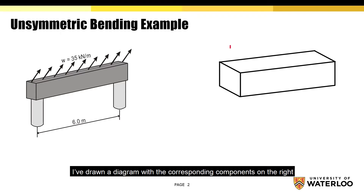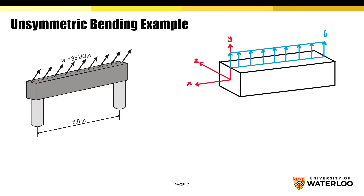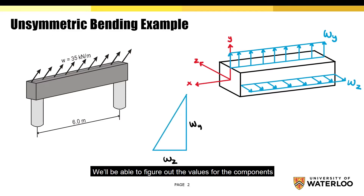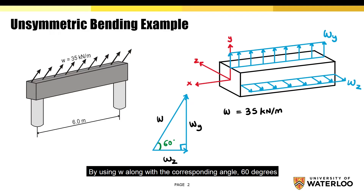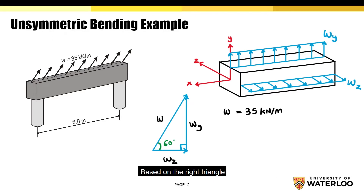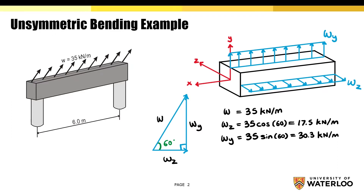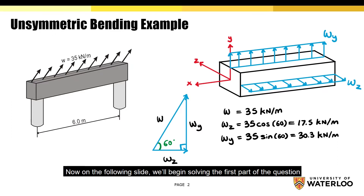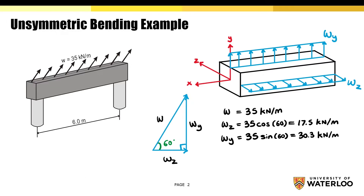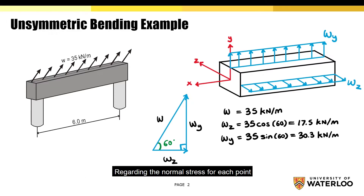I've drawn the diagram with the corresponding components on the right. You'll be able to figure out the values for the components by using W along with the corresponding angle of 60 degrees. Based on the right triangle, Wz is equal to 17.5 kN per meter and Wy is equal to 30.3 kN per meter. On the following slide we'll begin solving for the first part of the question regarding the normal stress for each point.